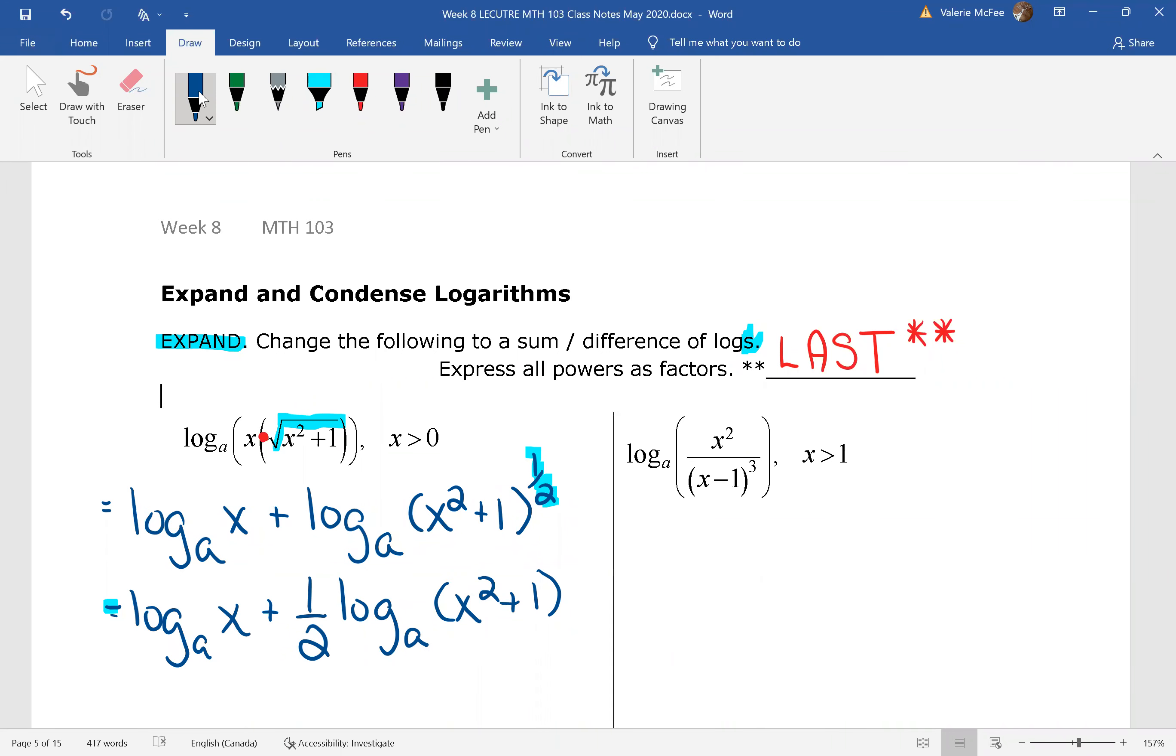There is nothing else to be done here. That argument of x squared plus one is addition inside of a single log. I don't have a property for that. This is where we stop.